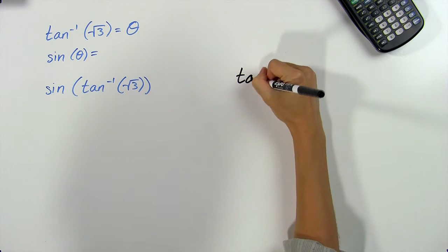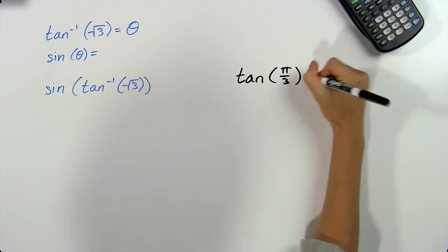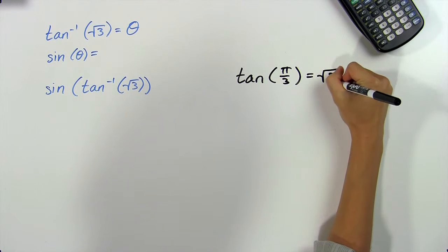In fact, the tangent of pi over 3 is equal to the square root of 3. You can also use your calculator to find that value if you don't remember it.